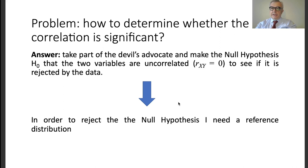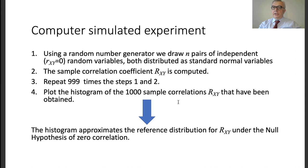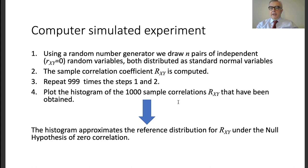To explain the notion of a reference distribution, I will go through a computer-simulated experiment in four steps. First, I use a random number generator to draw n pairs of independent, normally distributed random variables. Being independent, their correlation is zero. Because the correlation coefficient is invariant under affine transformation, I can draw variables with unit variance and zero mean — the specific values don't matter. Then I compute the sample correlation coefficient, which is a random variable since it depends on the drawn samples.